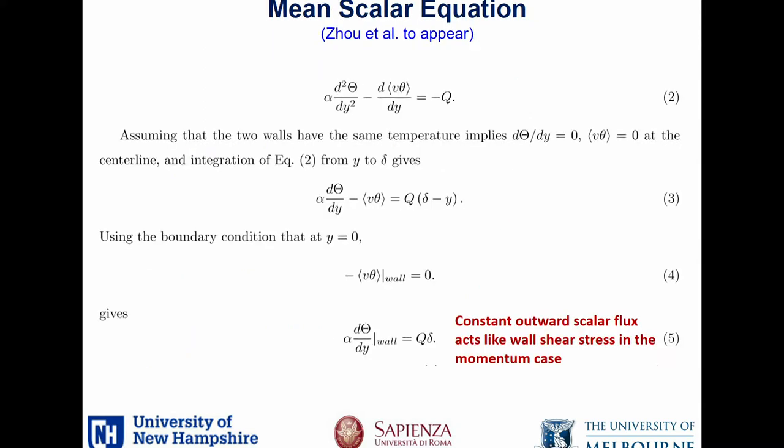Here, Q is the uniform heat generation, theta is your mean scalar, alpha is your diffusivity, and the Prandtl number is nu over alpha. If we take this equation and manipulate it a bit, we can show that there's a constant outward scalar flux that acts like the wall shear stress in the momentum case. This flow is really nice for investigating scaling behaviors because we don't have the complications of heat flux from the walls — we have uniform heat generation — and thus, for the Prandtl number equal one case, we get an equation that's identical to the momentum equation.